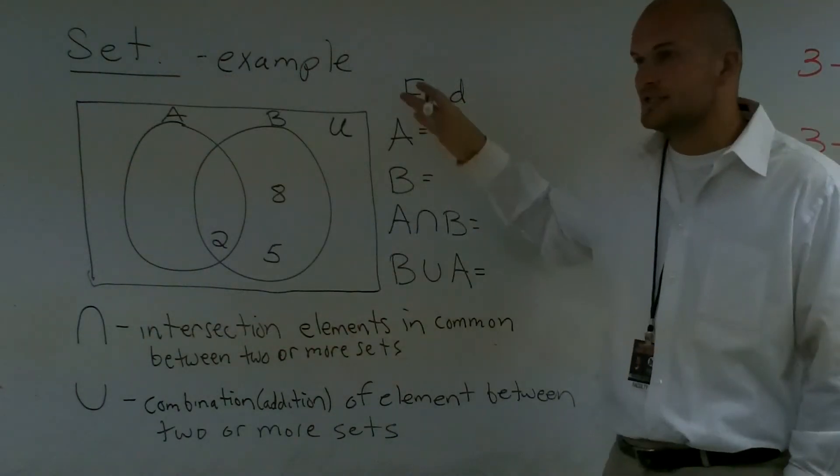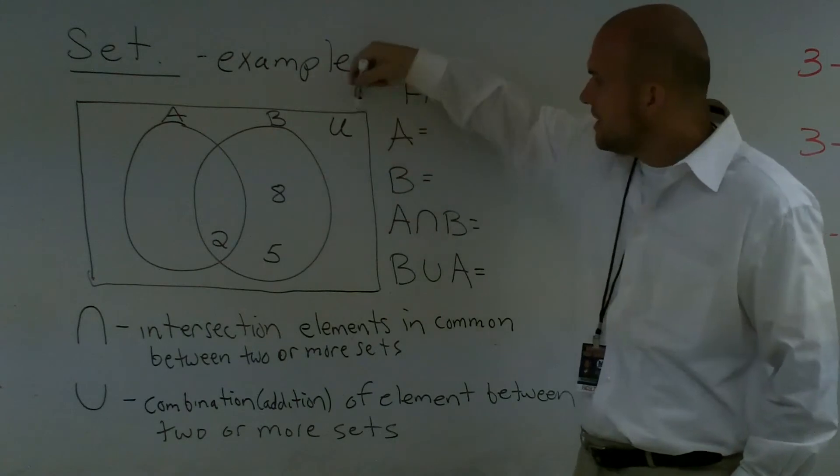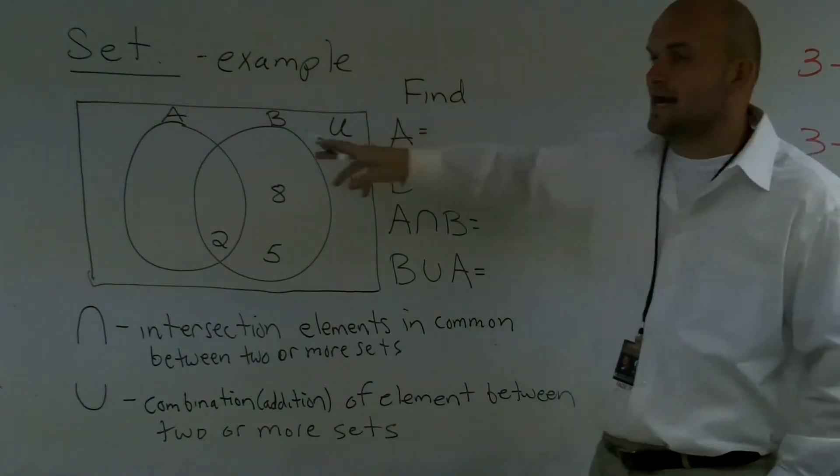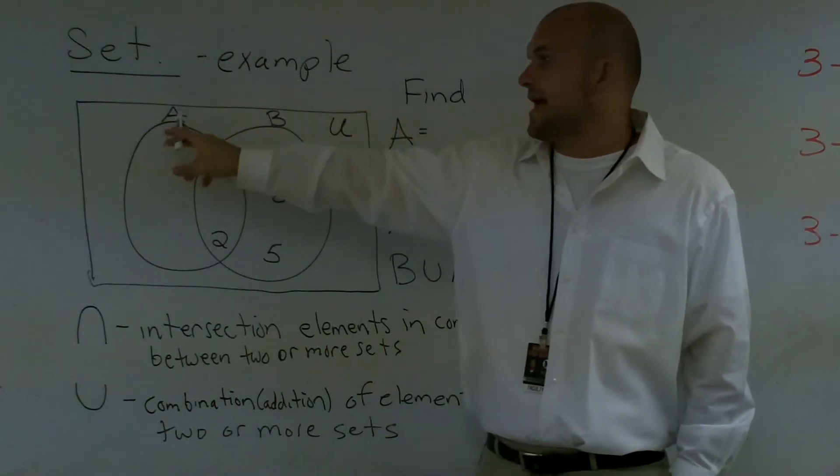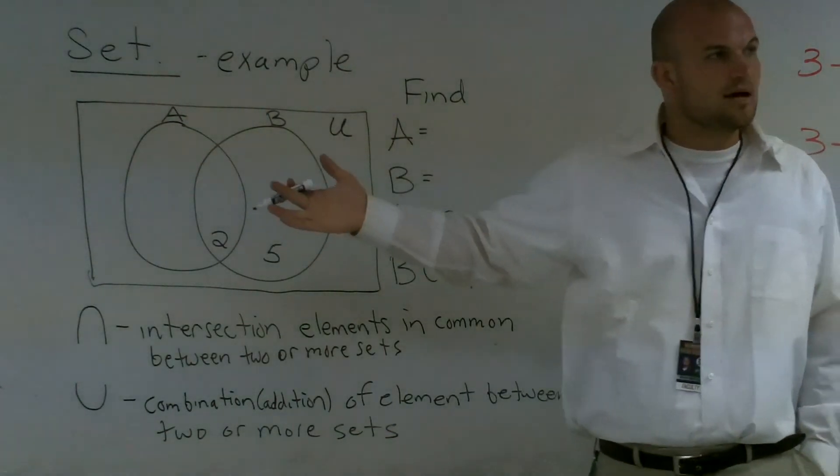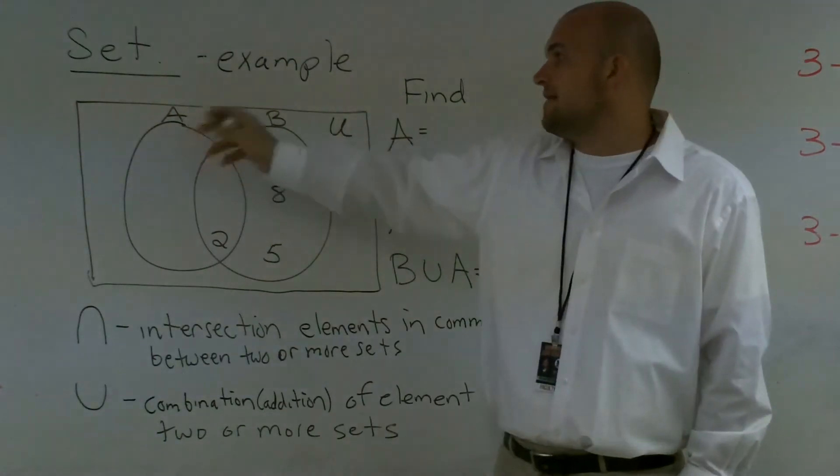That's what this box represents, our universal set. And I denote it with a U up there at the top. Then I have two sets inside of our universal set. So you just have A and B. You can also say they're subsets of our universal set.